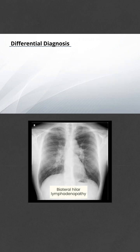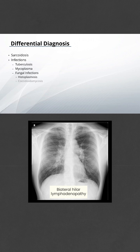The differential diagnosis of bilateral hilar lymphadenopathy includes sarcoidosis, infections — particularly tuberculosis and rarely mycoplasma — fungal infections like histoplasmosis and coccidioidomycosis, and malignancies, particularly lymphoma.